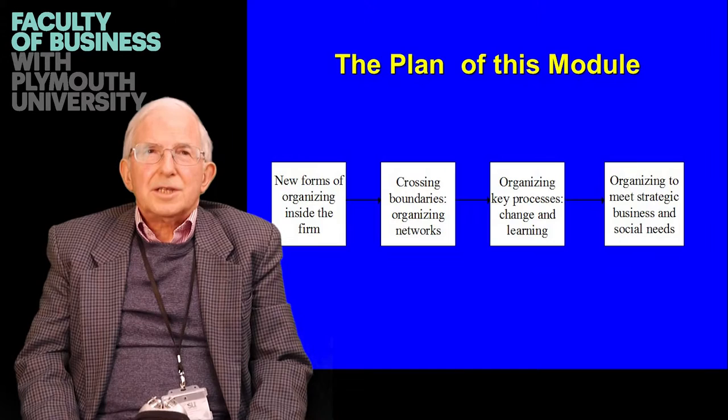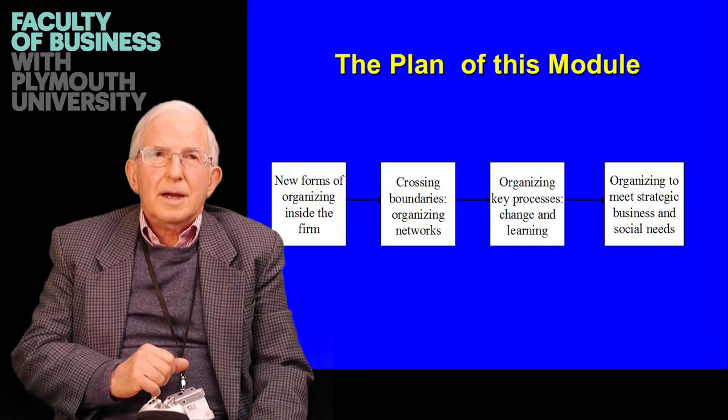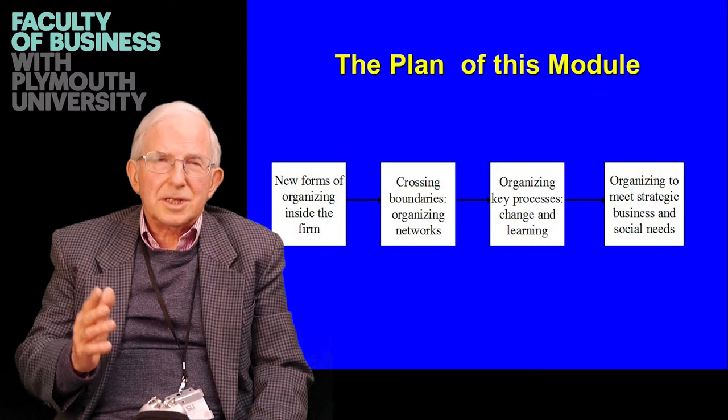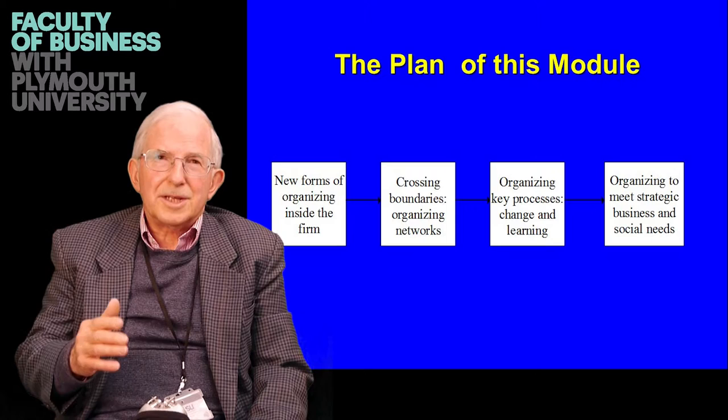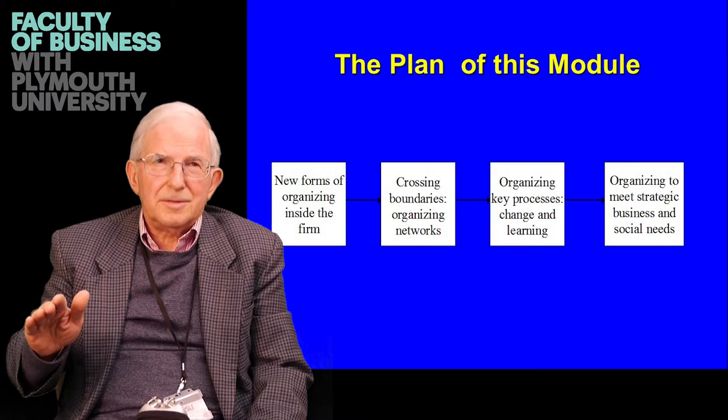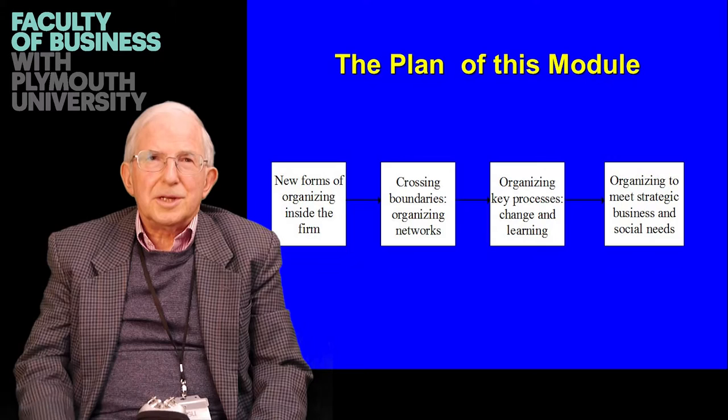The module itself starts off looking at forms of organising within the firm, and looks at issues like control and coordination as mentioned earlier. Then it takes account of the fact that a lot of work now isn't confined within individual firms — it crosses boundaries. We have things like global value chains, we have outsourcing, we have networks that are managed and have to be organised across different national boundaries and across different parts of the world, and this raises organisational challenges too.